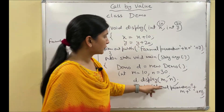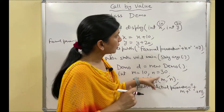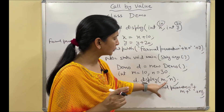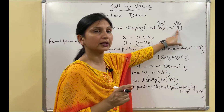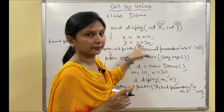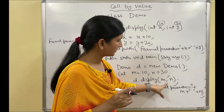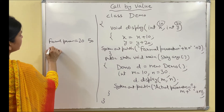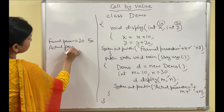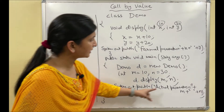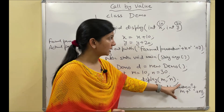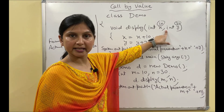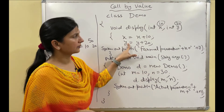In call by value, we just pass the values 10 and 30 to x and y. Increasing x and y inside the function does not affect m and n. After the function call, if you display m and n, they still show 10 and 30. The actual parameters remain intact — no change occurs in them.